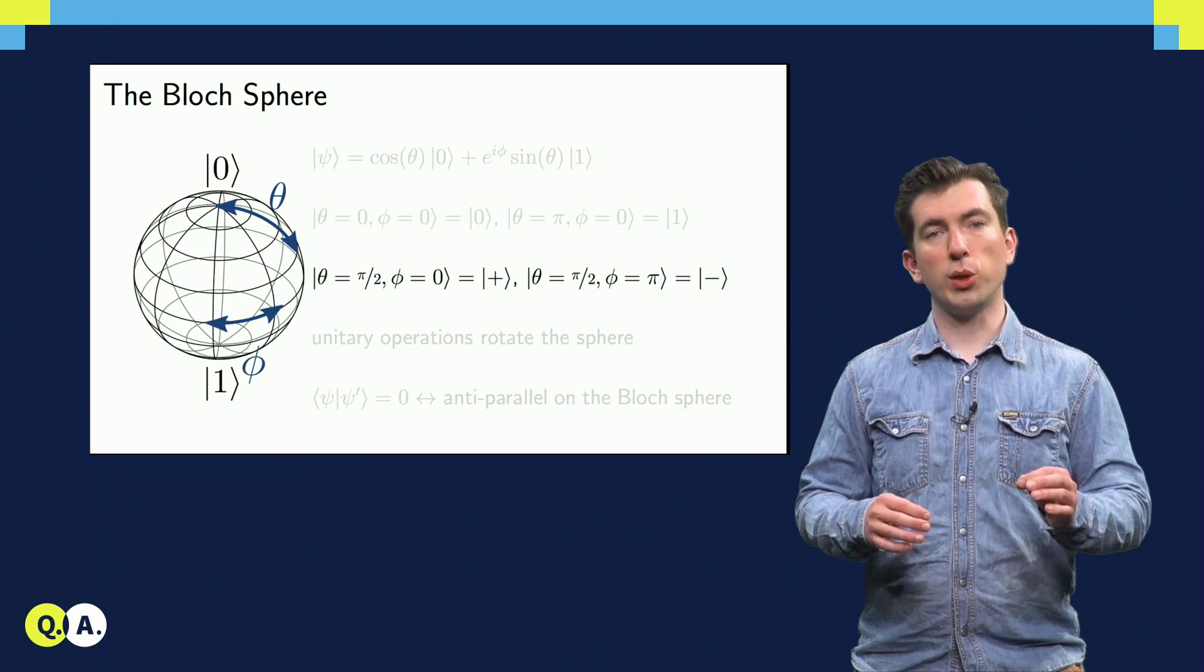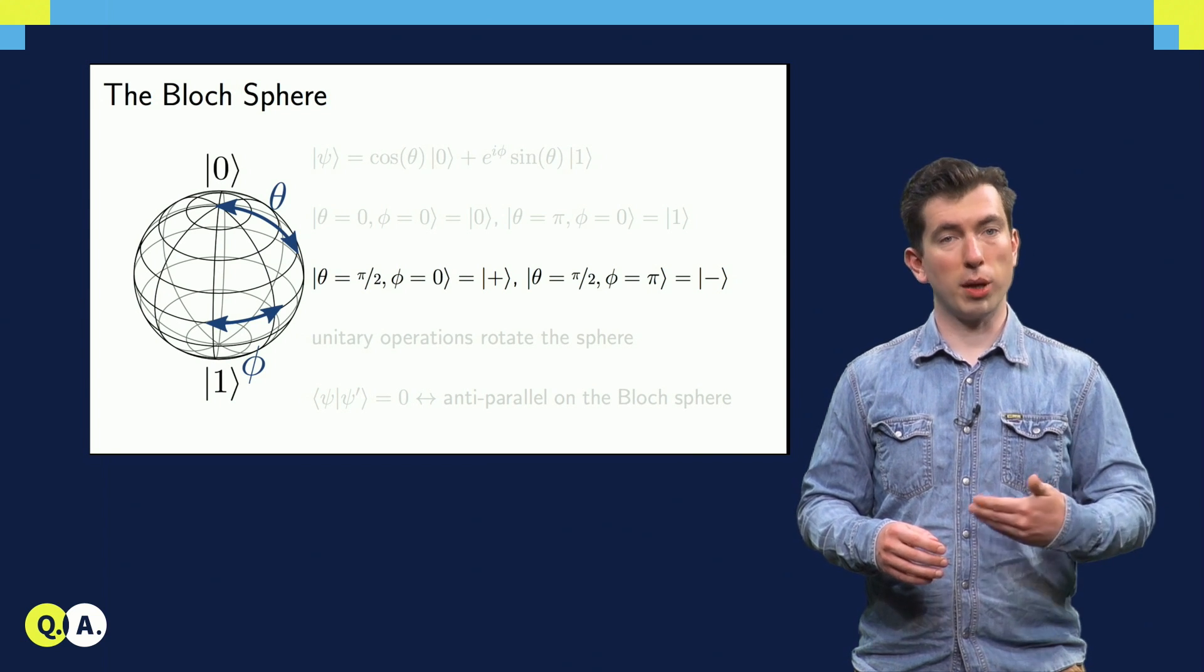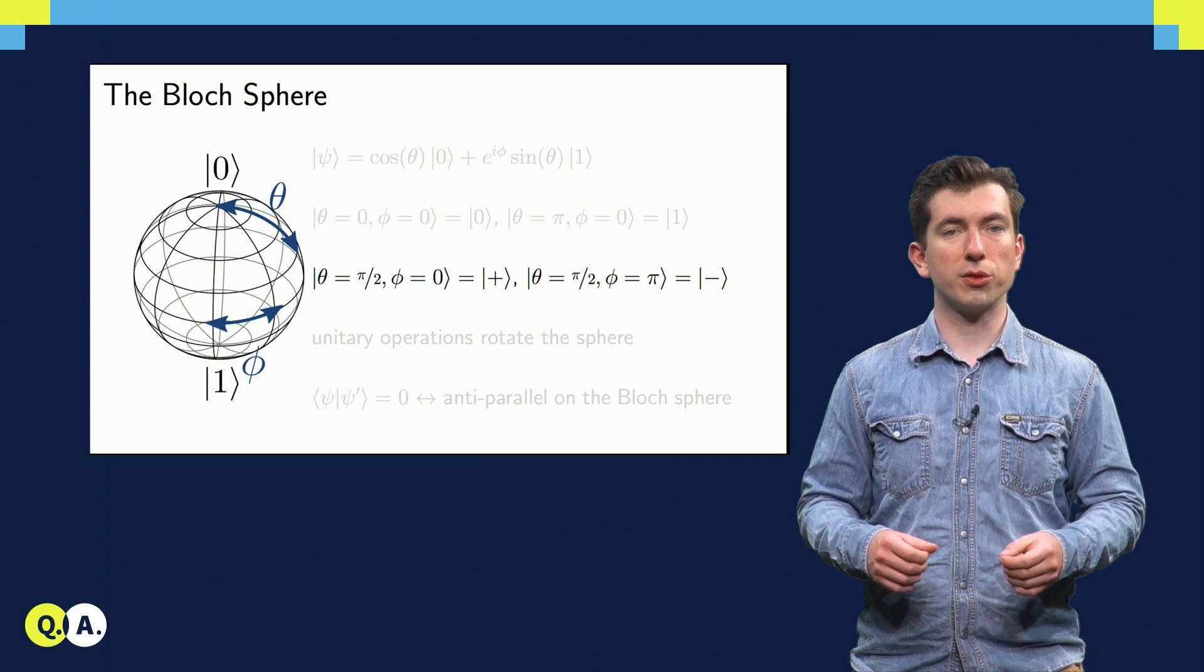Likewise, if we set theta to pi by 2, and phi to either 0 or pi, we get one of the states from the plus-minus basis, on the equator of the sphere.